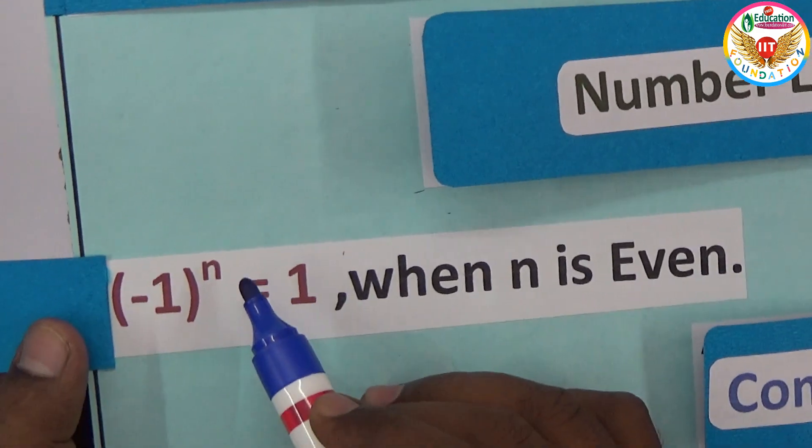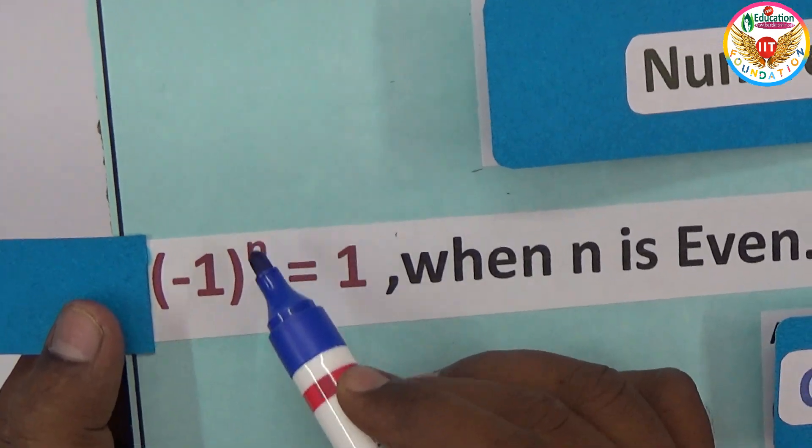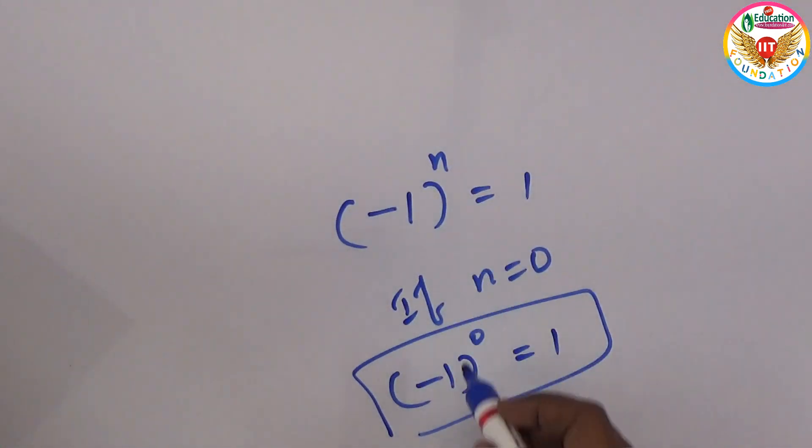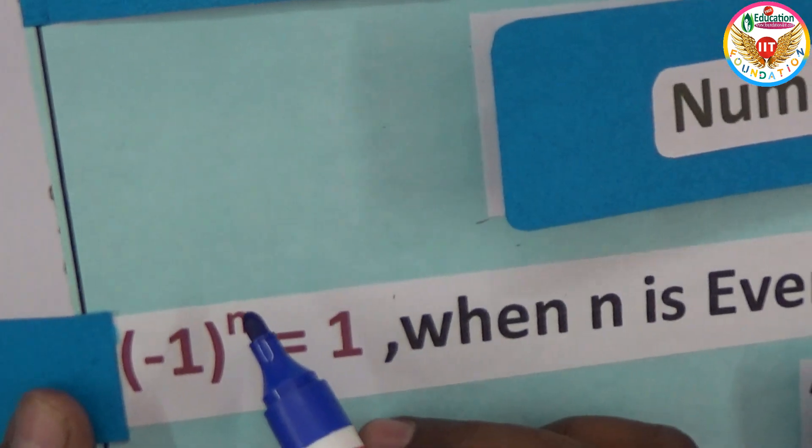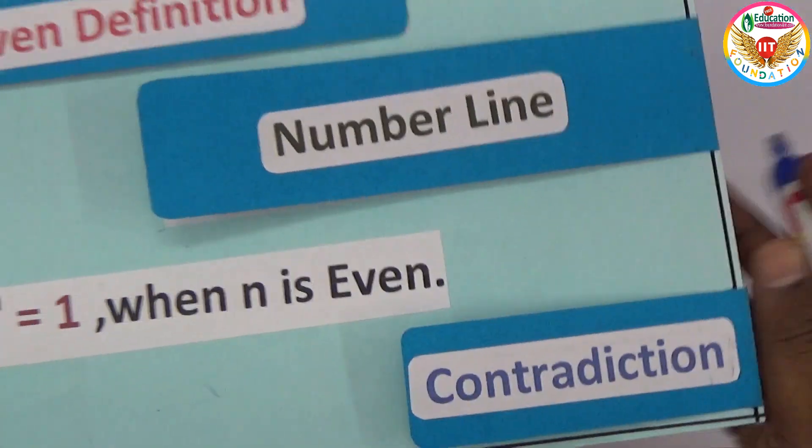So n equals zero. In the n place, you can keep zero. That means minus one to the power zero equals one. That means in the n place, zero. So zero is even.